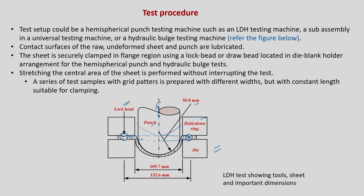The blank holder has a typical corner radius, and the die also has a corner radius. The gap between the die inner walls is about 105.7 mm, and the lock bead is spaced at about 132.6 mm — it is a circular arrangement. The sheet is clamped circumferentially using the draw bead plus blank holding force. The draw bead avoids radial movement of the sheet so the sheet stretches below the punch. I have shown this LDH test setup with tools, sheet, and important dimensions.